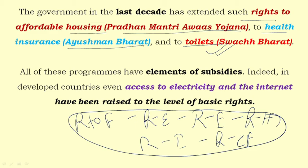Providing electricity up to a certain free limit for those who cannot afford it is rational welfare. But saying all water bills and all electricity bills will be completely waived is irrational — it burdens the fiscal body and misuses taxpayers' money. That is irrational. So that is the difference between the freebie culture and social welfare schemes.